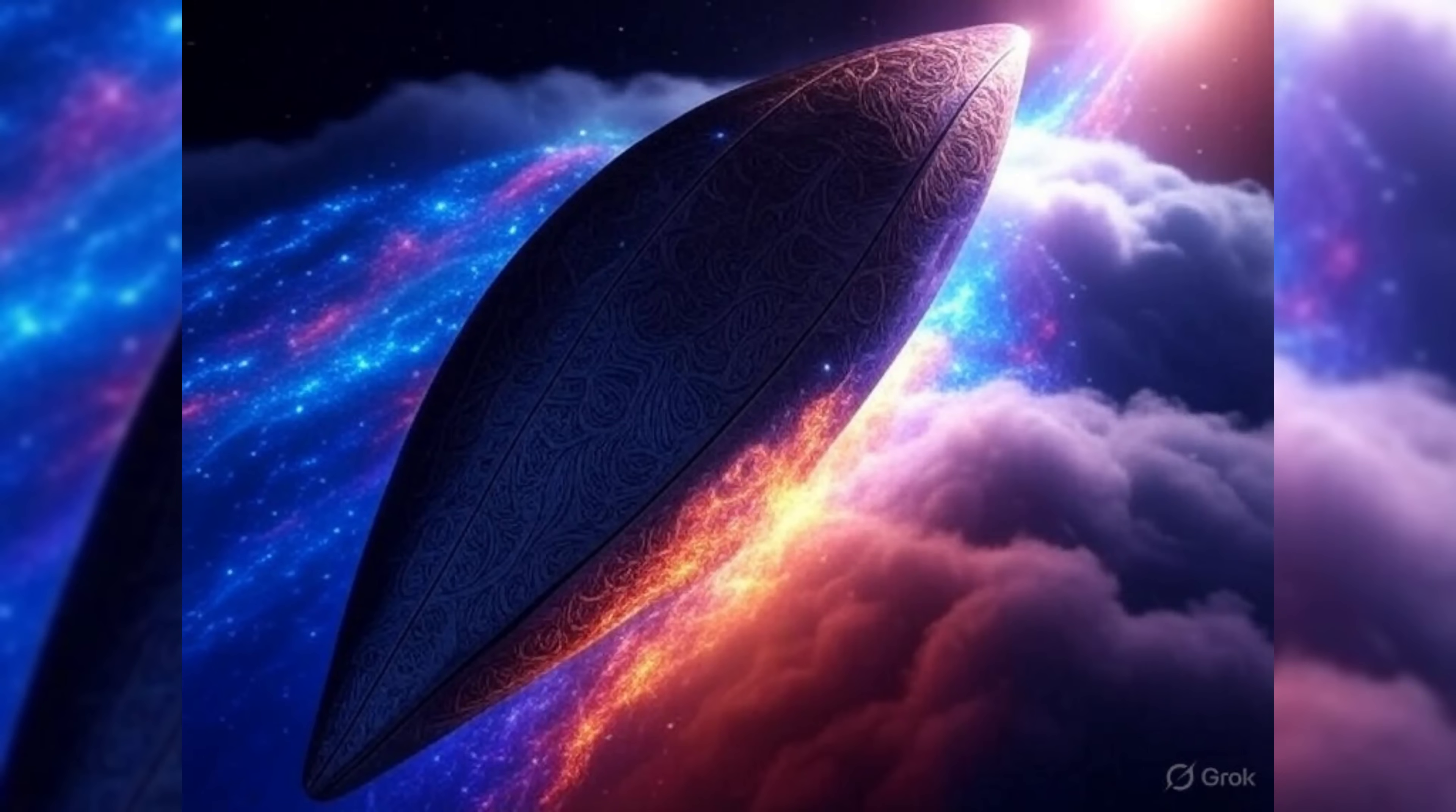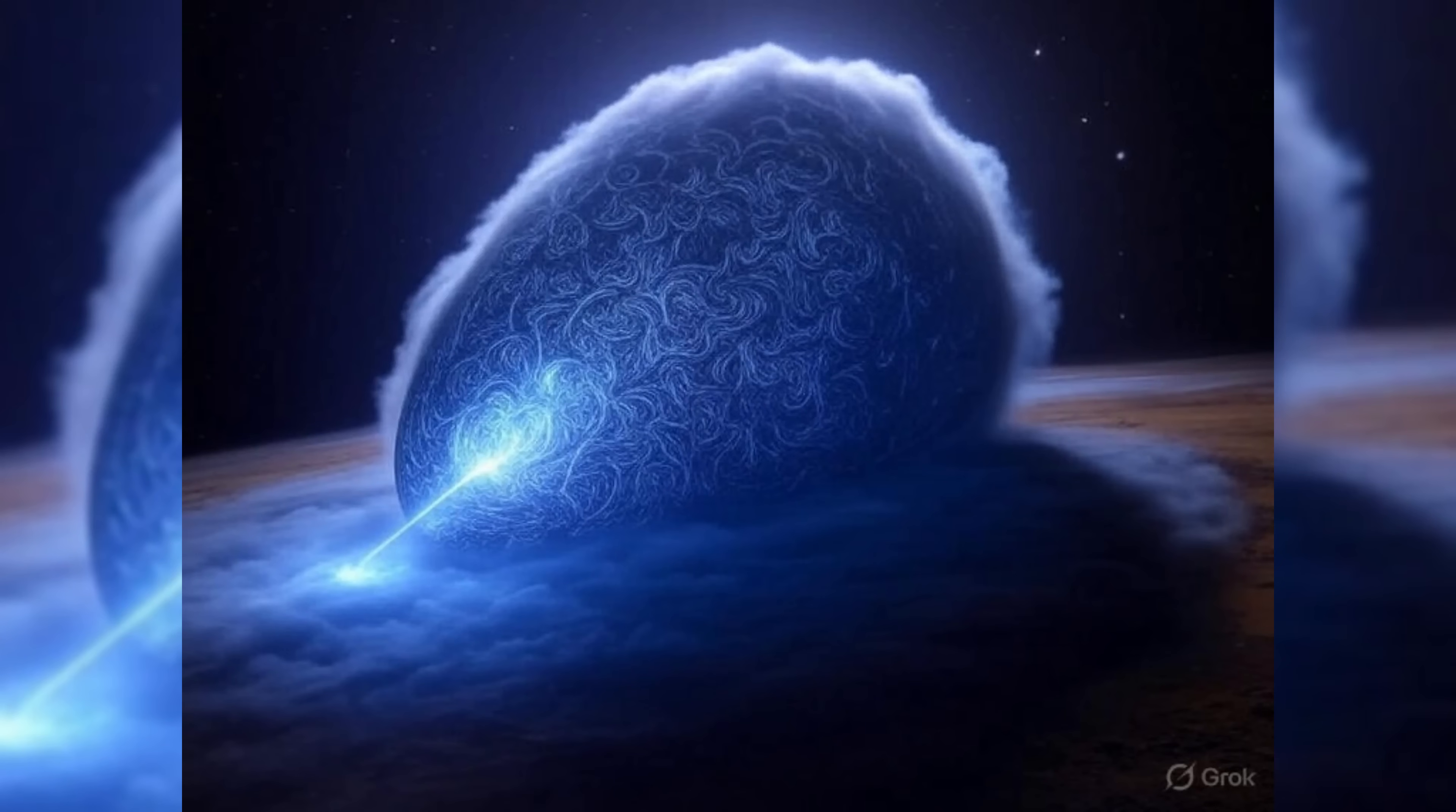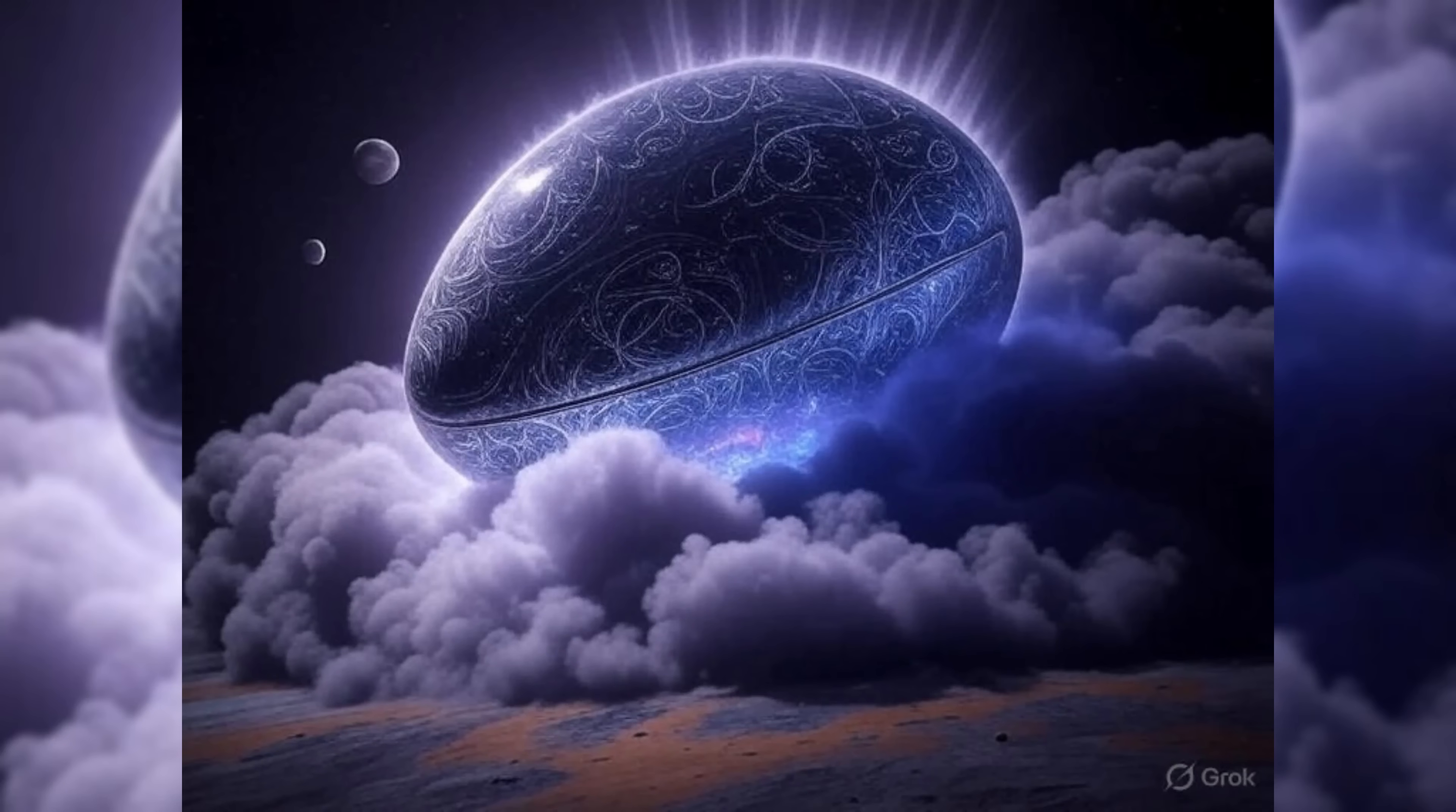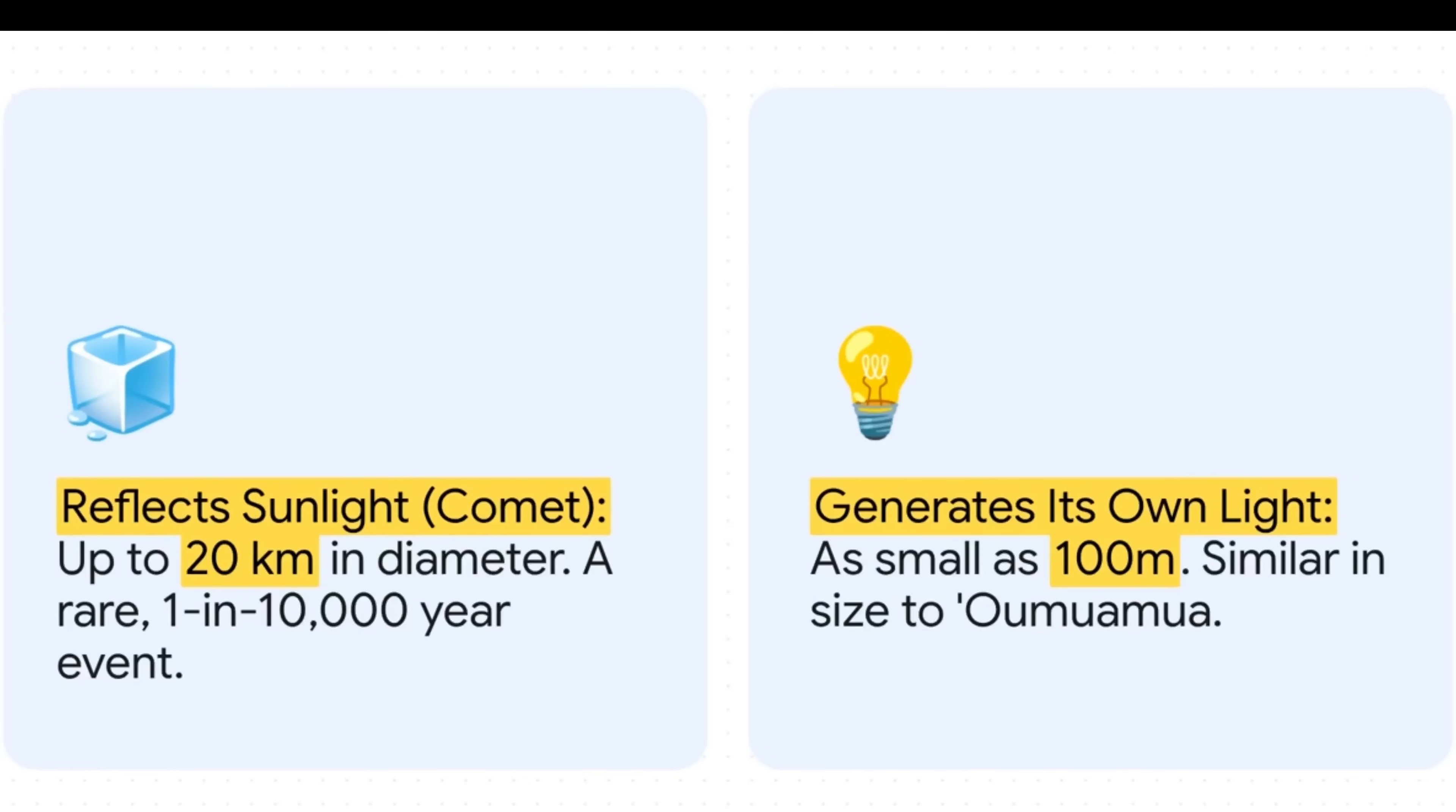What if the central object isn't natural? What if it's artificial? A craft, maybe powered by something like nuclear energy. And that fuzzy glow we see? It's not a coma of gas and ice. It's just interstellar dirt and dust that the craft has picked up over its long journey, now being lit up from the inside. And what's so neat about this idea is that it completely solves the size problem. If it's making its own light, it doesn't need to be a 20 kilometer monster. It could be as small as 100 meters across, putting it in the same size class as Oumuamua, and making it a much more statistically believable kind of visitor.